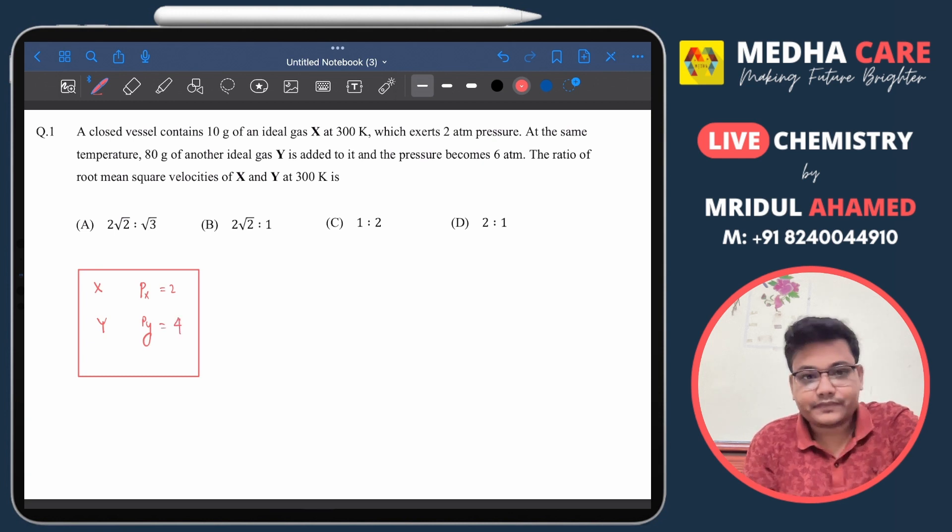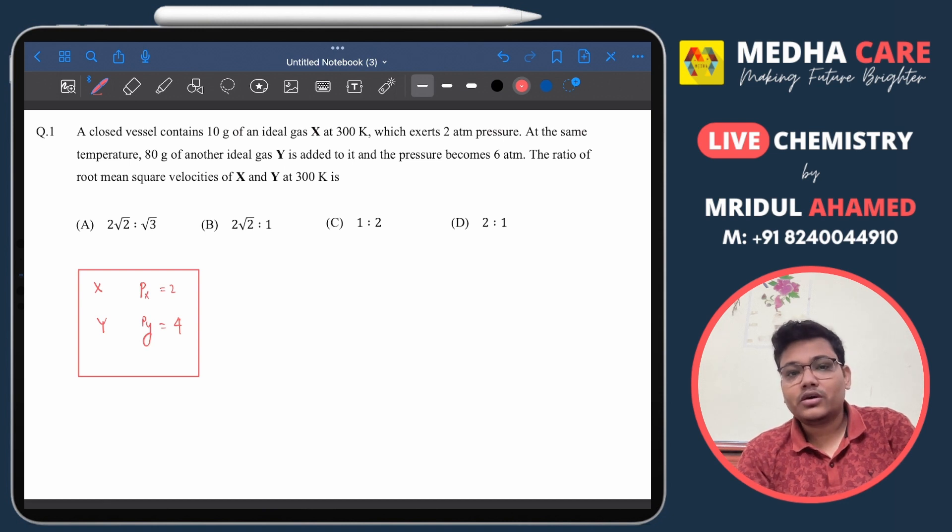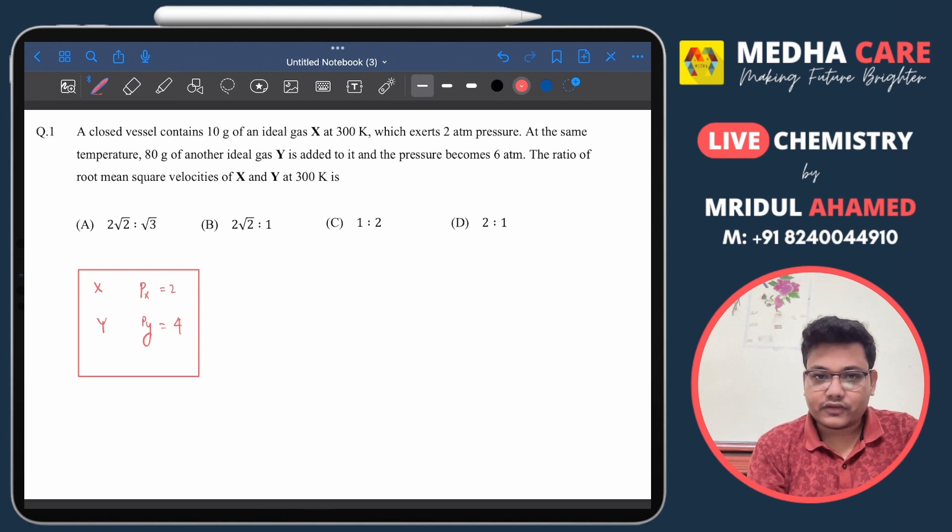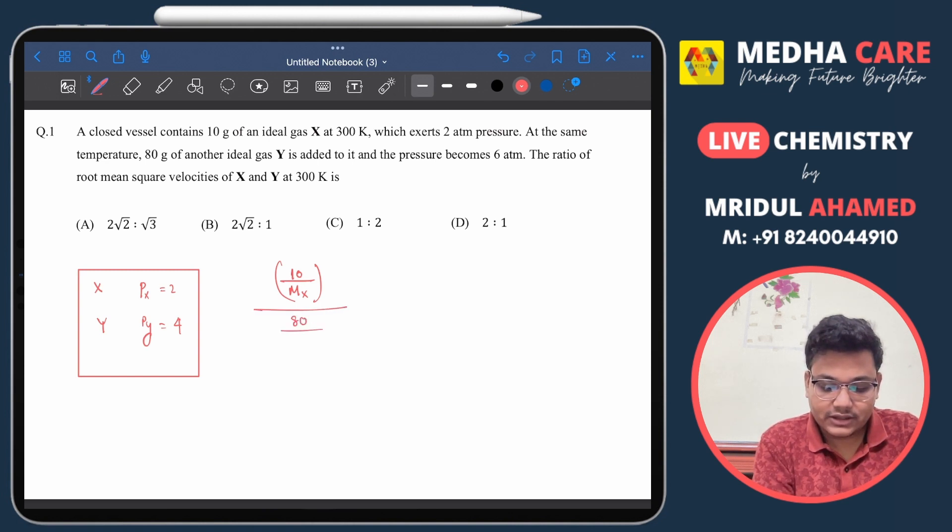So as we can see, the ratio of partial pressure will be equal to the ratio of their moles. So we have 10 grams of X. Consider the molar mass of X is Mx, then the mole of X will be 10 divided by Mx. That is the mole of X divided by, if we consider mole of Y, that will be 80 divided by molar mass of Y.